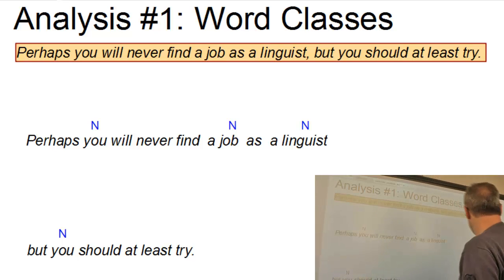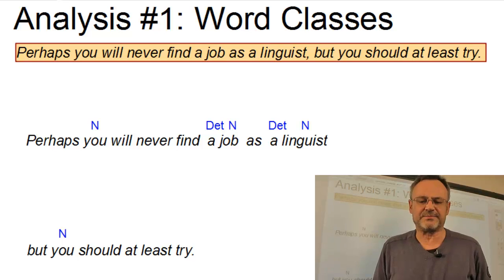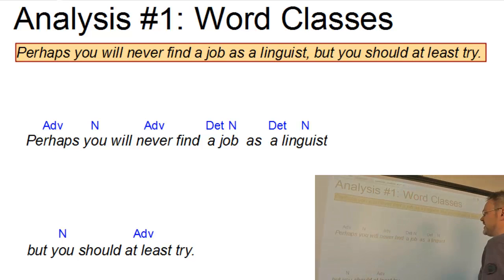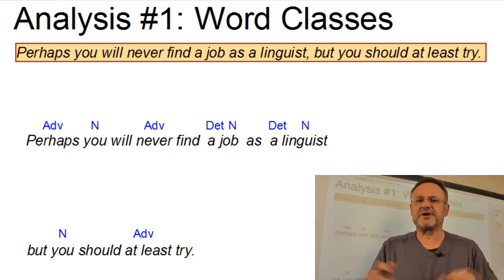Two of our nouns are preceded by determiners, a job, a linguist. So in this case, the indefinite article a. And then we have three adverbs. Perhaps, never and at least. And they have different function though.